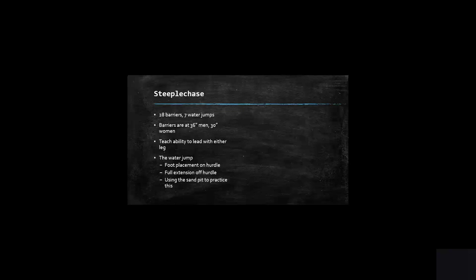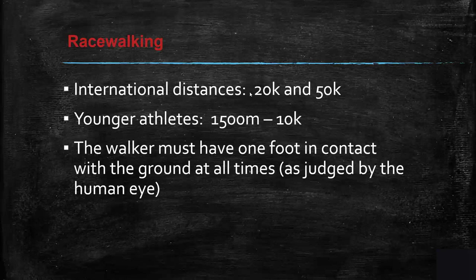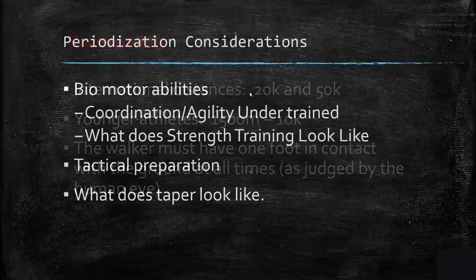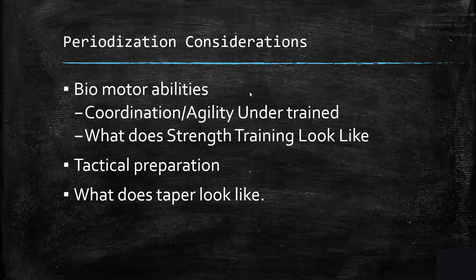Steeplechase athletes should have good eccentric capacity and jumping ability — not necessarily for clearing the barrier itself, but because of the load they need to handle coming off the barrier. That's probably more of a dictator of success. For race walking, international distances are 20K and 50K; younger athletes usually go from 1500 meters up to 10K. The walker must have one foot in contact with the ground at all times as judged by the human eye, and too many faults in a row results in disqualification.